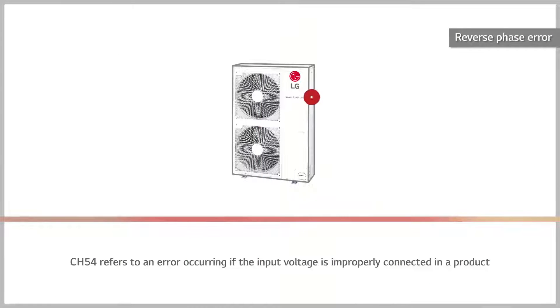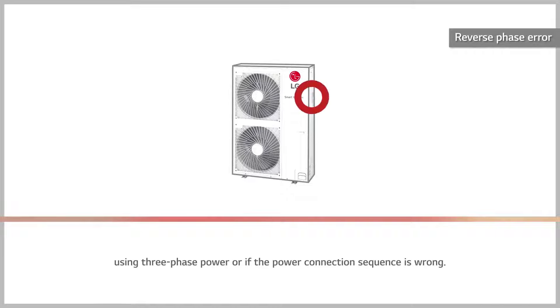Channel 54 refers to an error occurring if the input voltage is improperly connected in a product using three-phase power or if the power connection sequence is wrong.